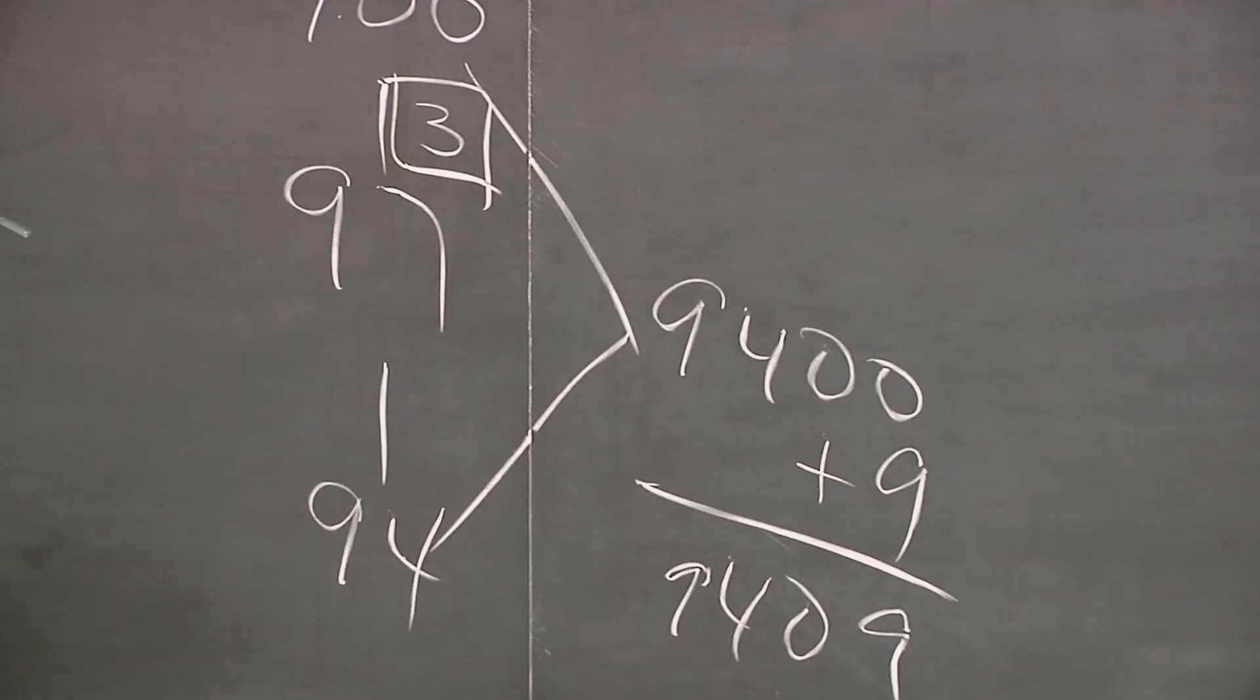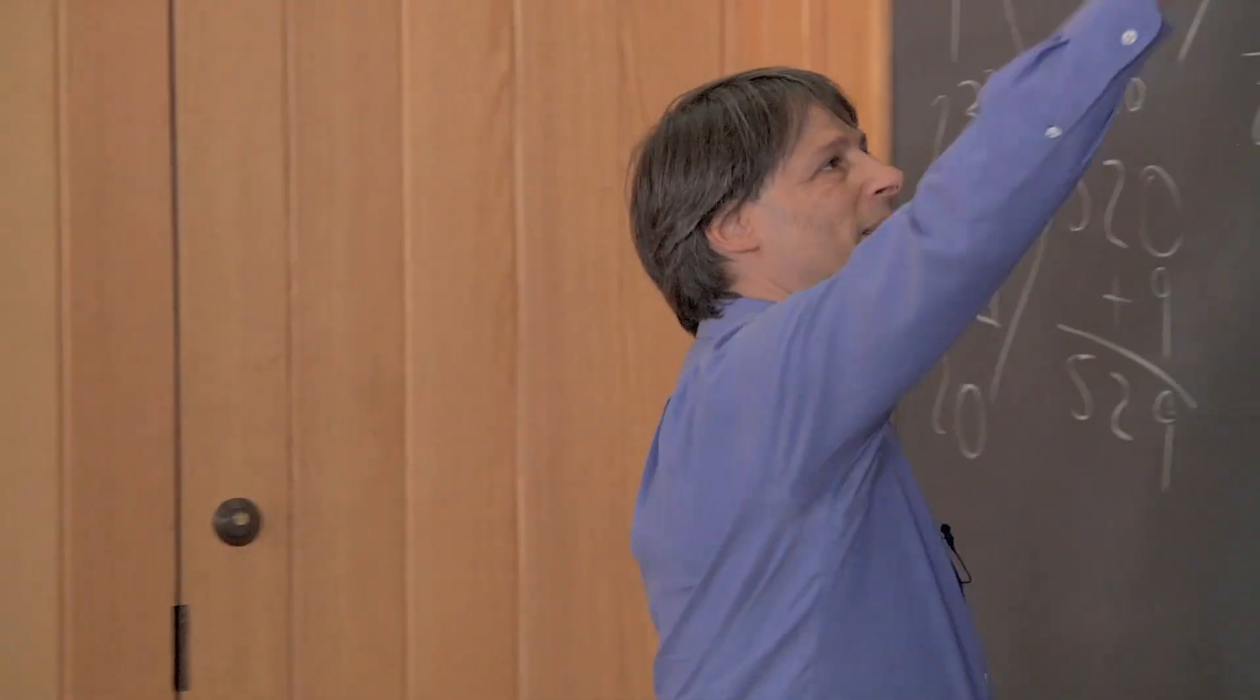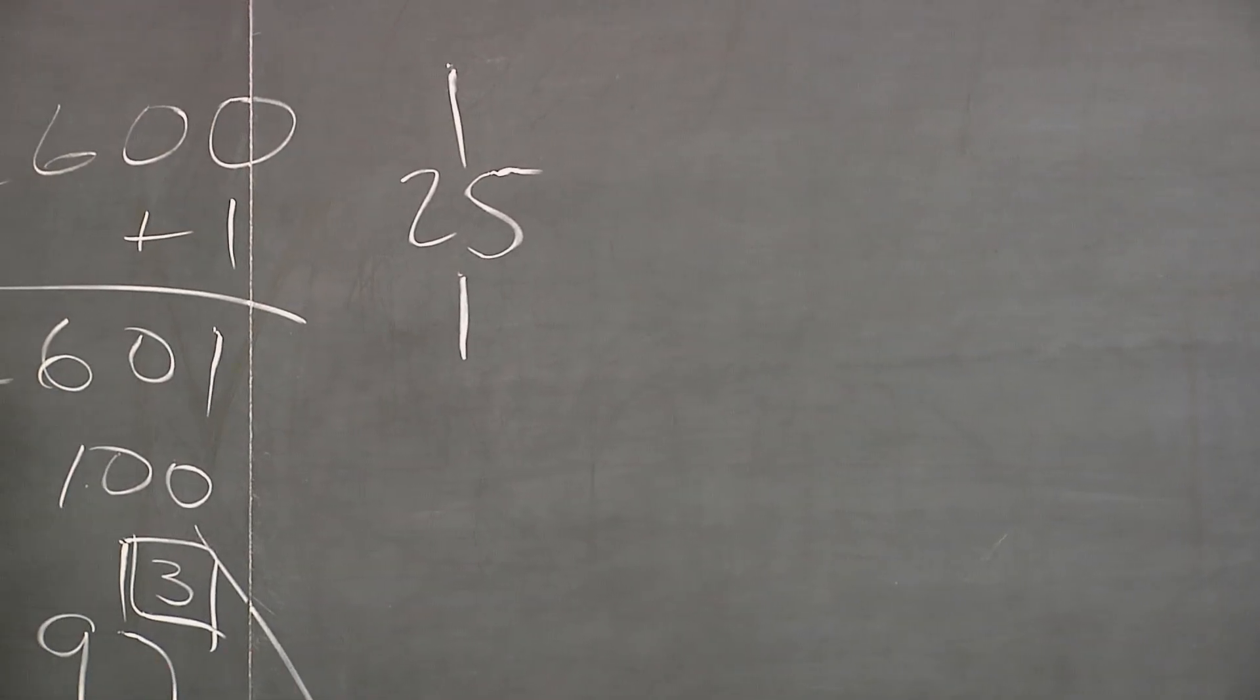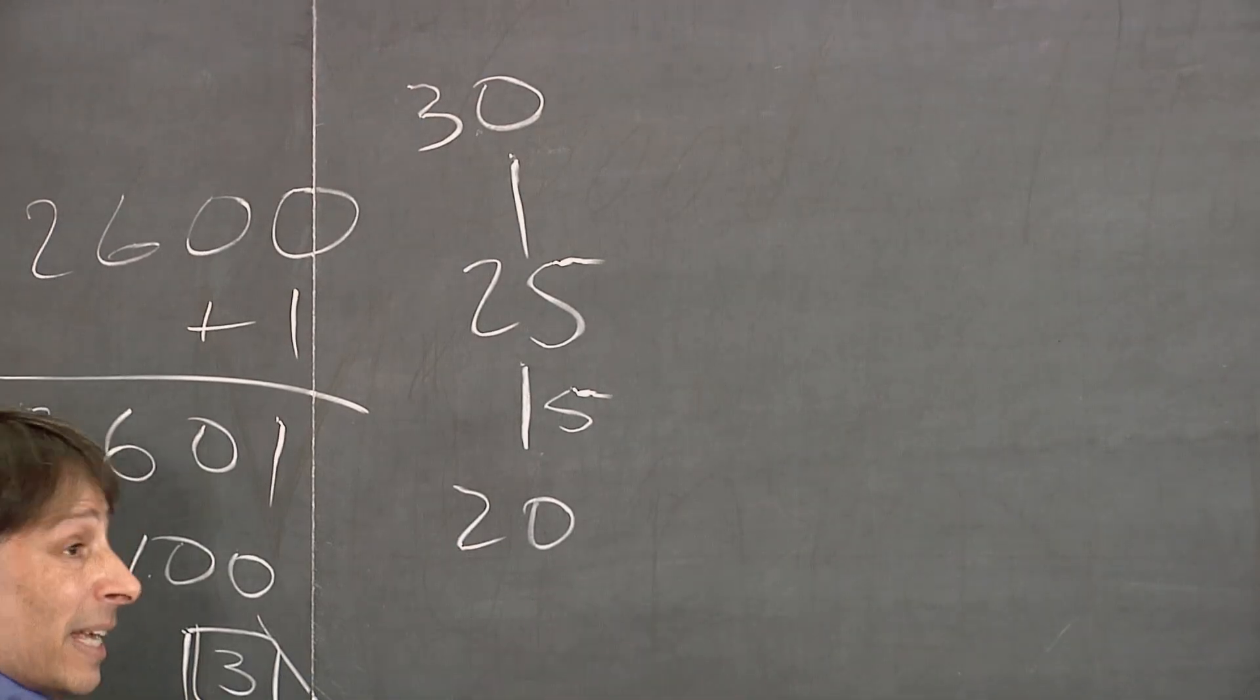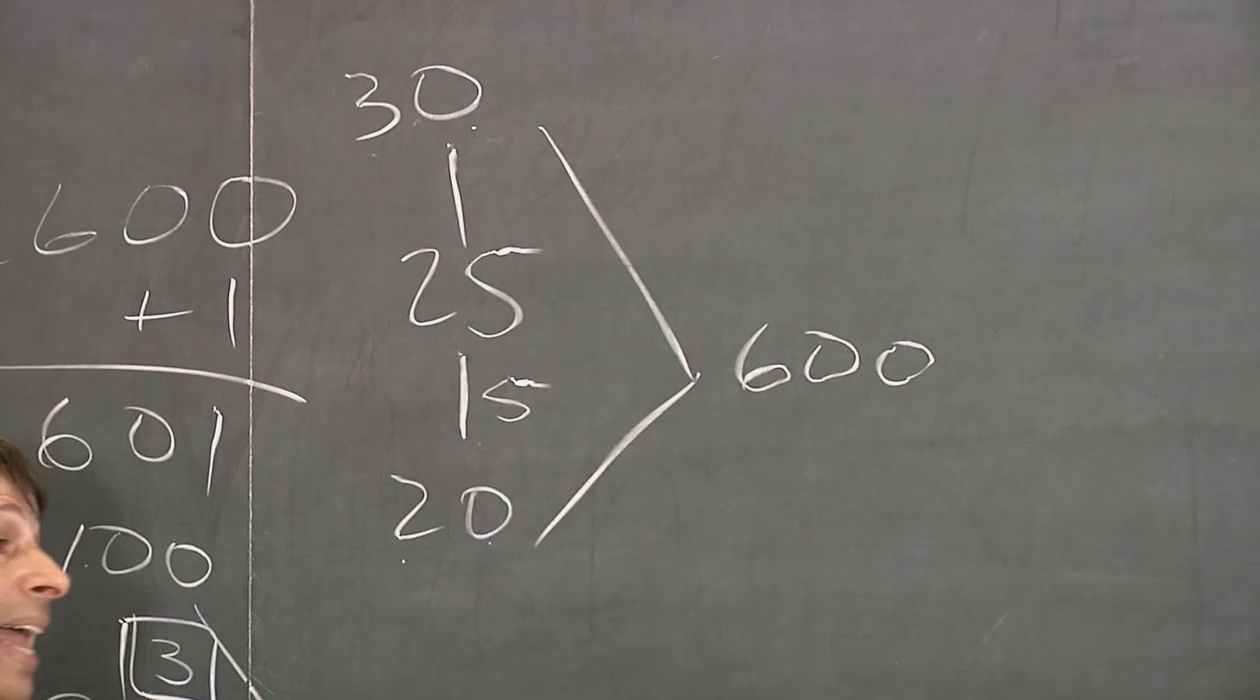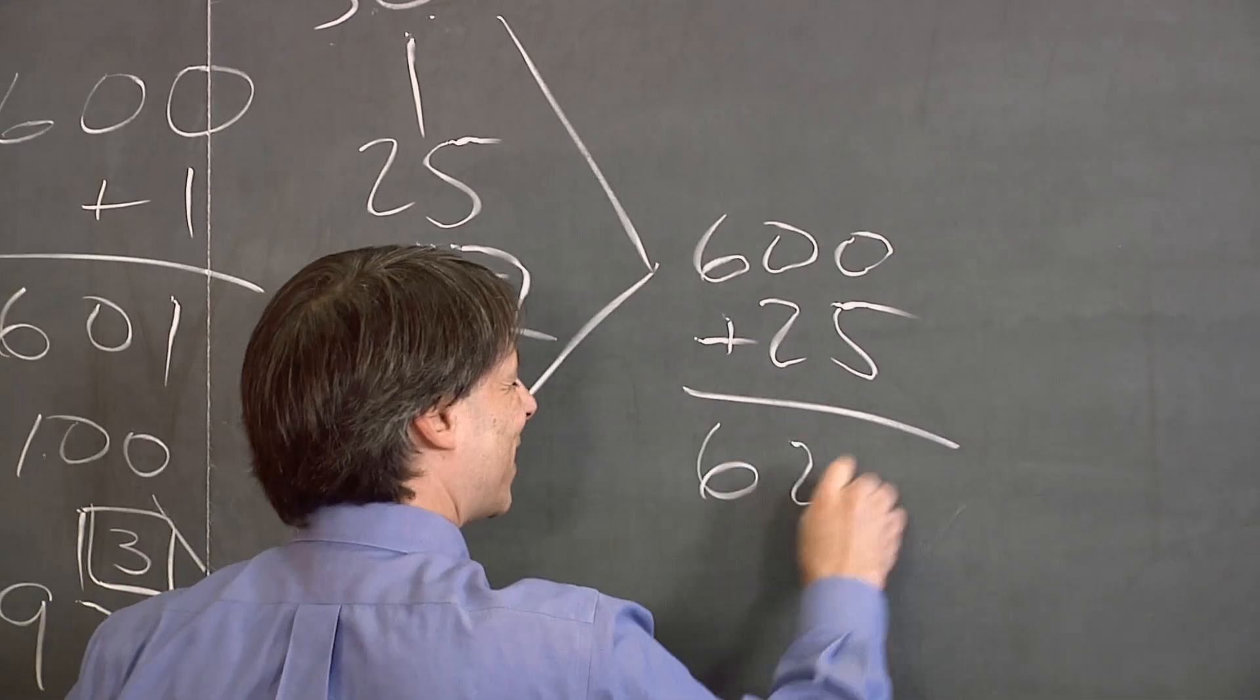Now I mentioned earlier that we would do problems that ended in 5. So let me show you. If any of this was confusing to you, here's something that you might find even easier to do if the number ends in 5, like 25 squared. Then you can go up 5 or down 5. It doesn't matter. If you go down 5 to 20, you then have to go up 5 to 30. 20 times 30 is easy. That's 2 times 3 with 2 zeros attached, is 600. Add to that the square of 5 which is 25. 600 plus 25 is 625. And that's the answer.